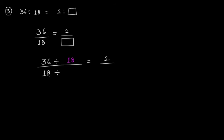Since we divided 36 by 18, we'll also divide 18 by 18. The number you'll get is 1. So the ratio is 2 to 1.